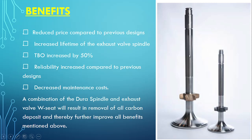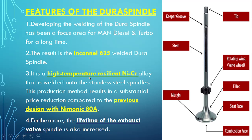The dura spindle is installed in the stem area of the exhaust valve. The material used is high-temperature nickel-chromium alloy (Inconel 625), replacing the earlier material Nimonic 80A. It has increased the lifetime and time between overhauls. These are the key answers which may be asked in examinations or interviews. I hope after watching this video you have gained the concept of the dura spindle. If you have any doubts, please comment below and I will revert back.